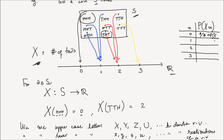The probability that capital X takes a value of one is how many of these points in your sample space are mapped to the point one. I have one, two, three — those are in blue — three out of eight are mapped to the point one. Likewise, the probability of X taking a realization of two is the number of points in the sample space mapped to the value of two, and those are three points — three out of eight. And the probability that X equals three is only one point in your sample space mapped to the number three, so that's one out of eight.